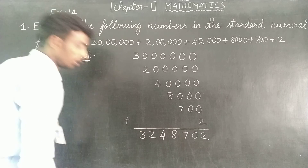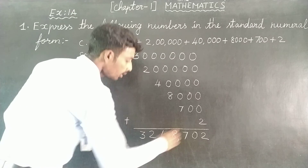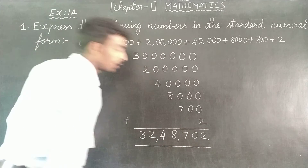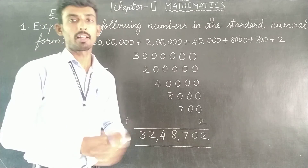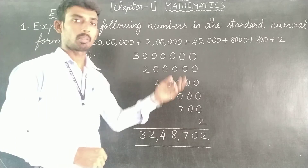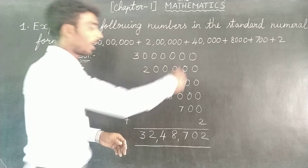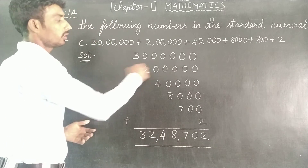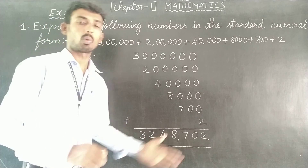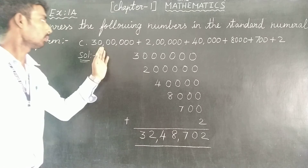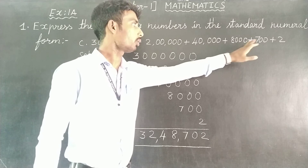So the digits are: 3, 2, 4, 8, 7, 0, 2. The standard numeral form is 32,48,702. So: 30 lakh plus 2 lakh plus 40,000 plus 8,000 plus 700 plus 2 equals 32,48,702. This is the standard form. We need to identify the place value of each digit correctly.